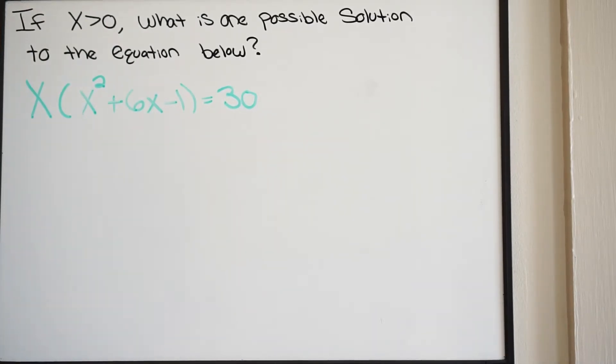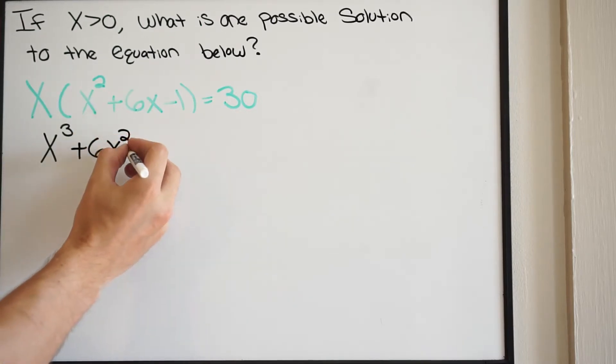We're going to simplify the left side of this equation by distributing x inside the parentheses to each of the terms. When I do that, I'm going to get x cubed plus 6x squared minus x, and this will be equal to 30.